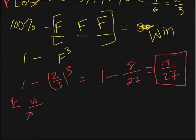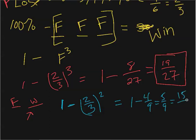Well, let's see. If I only have two tosses, the chances that I win are going to be the opposite of the chance of me failing both times. So that's going to be the opposite of two-thirds squared. And that comes out to be one minus four-ninths, which is five-ninths, which is fifteen-twenty-sevenths.